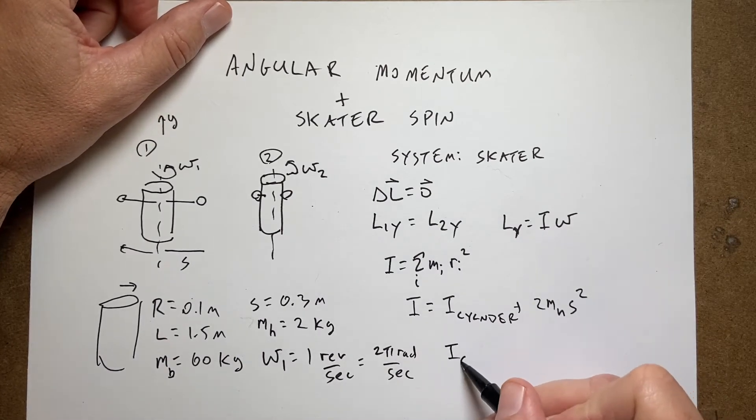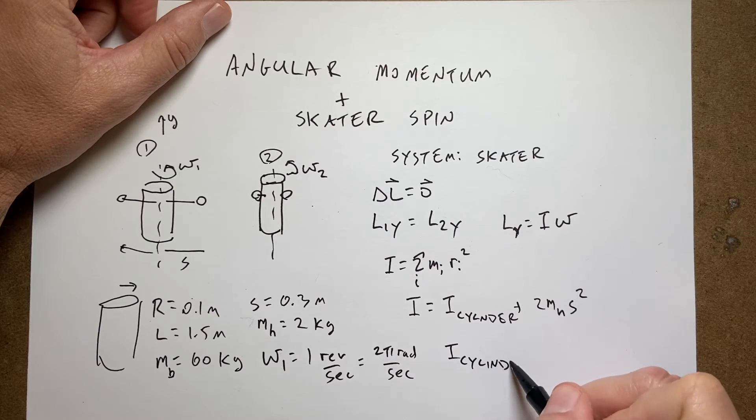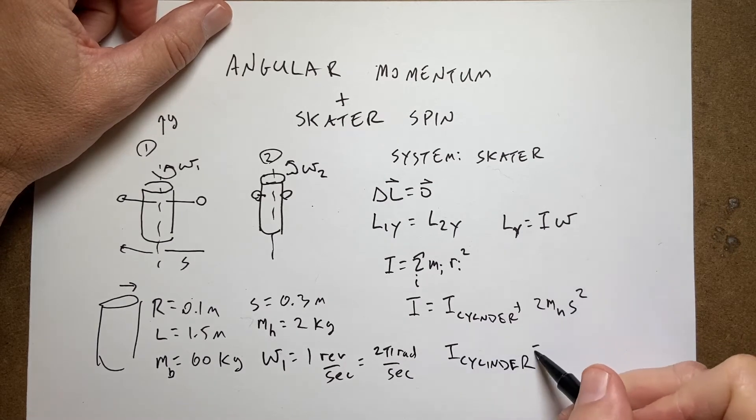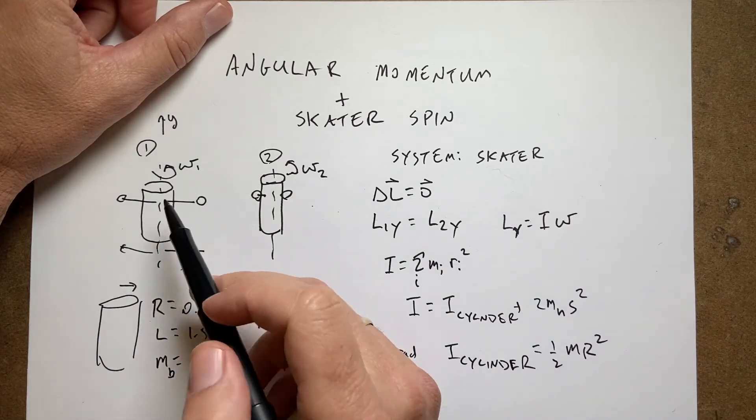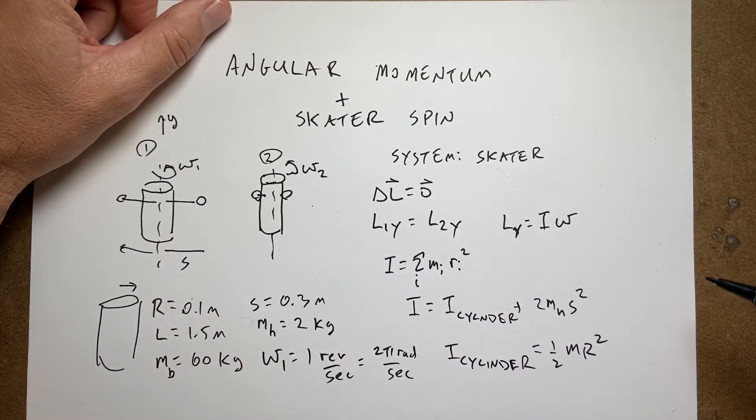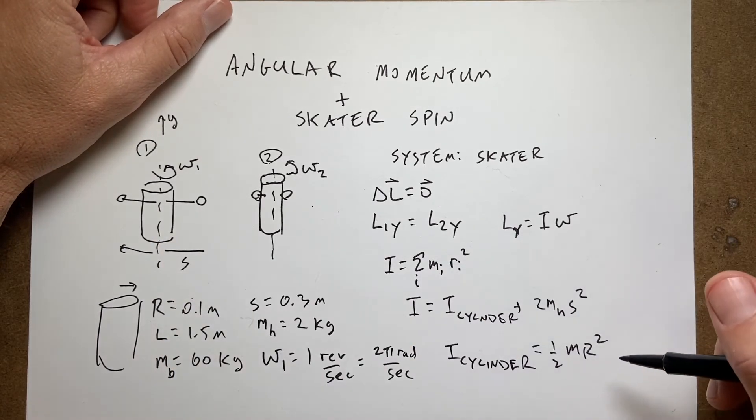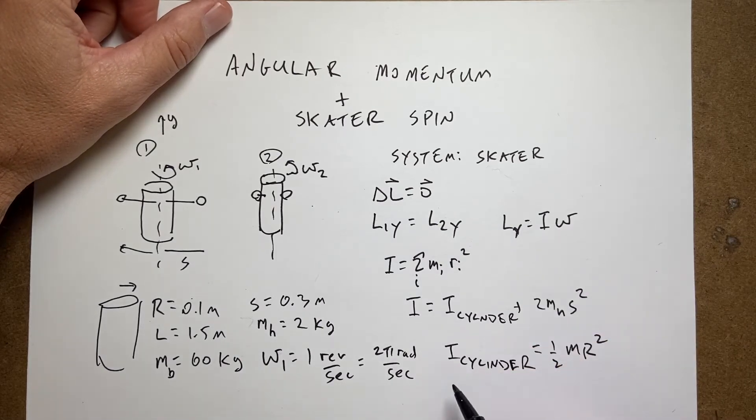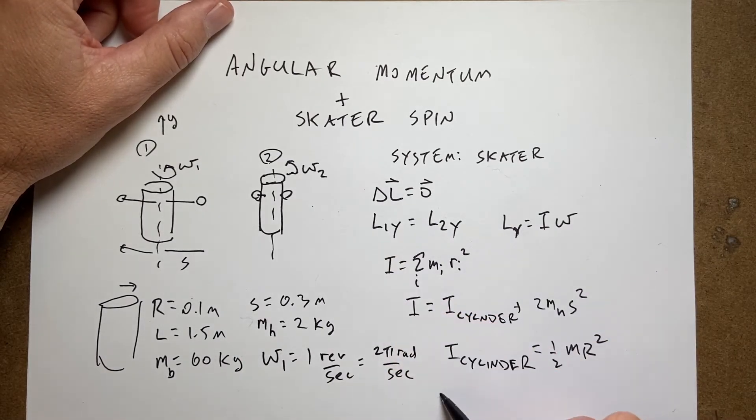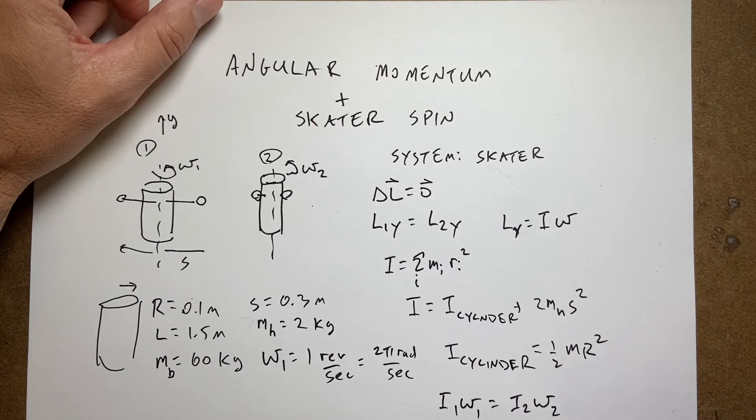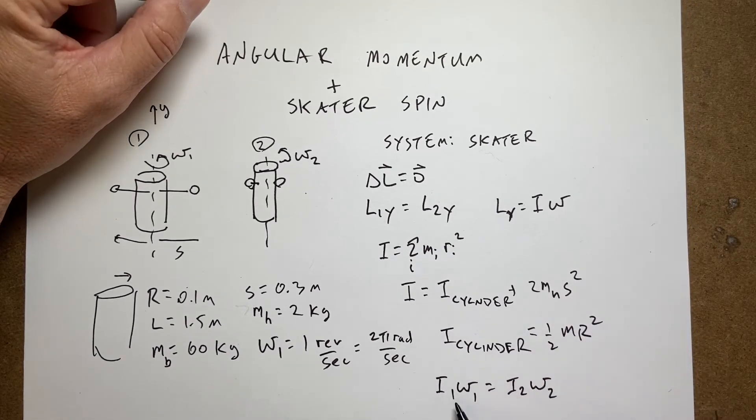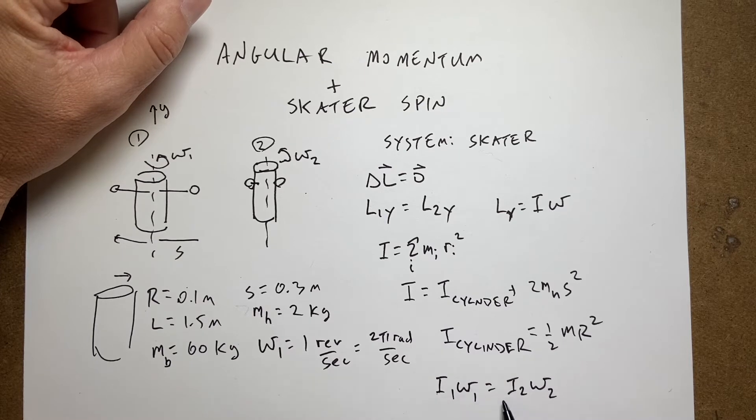So the moment of inertia of a cylinder, it's just the same as a disc, so it's going to be ½·m·r². I'm defining r to be the radius of the cylinder. Okay so if we get that then really what we're going to have is I1·ω1 equals I2·ω2. That's conservation of angular momentum. So if I want to find ω2 I need to find—I know that one—I just need to find I1 and I2.